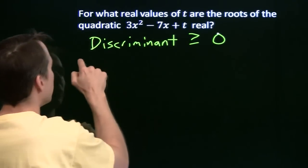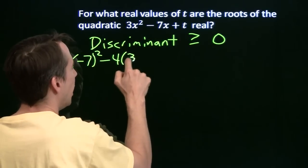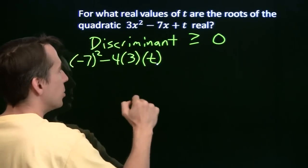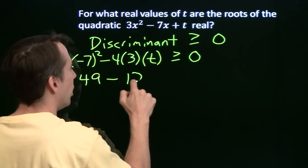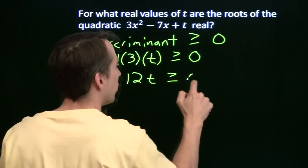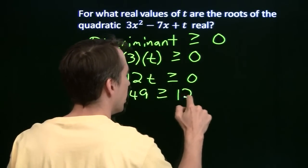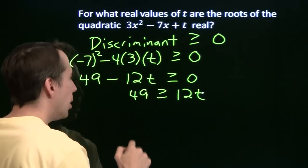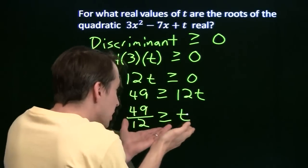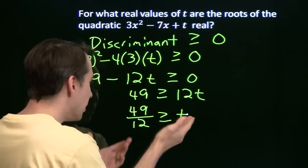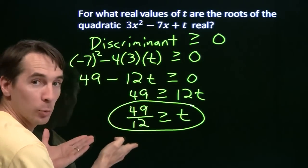We know how to find the discriminant: b squared minus 4 times a times c. In this case the constant term is t, and we need this to be greater than or equal to 0. Multiplying this out, we get 49 minus 12t is greater than or equal to 0. Adding 12t to both sides: 49 is greater than or equal to 12t. Dividing both sides by 12, we see that any value of t less than or equal to 49 over 12 gives us real roots, and we are done.